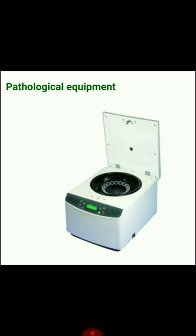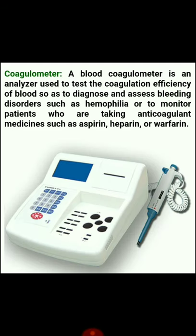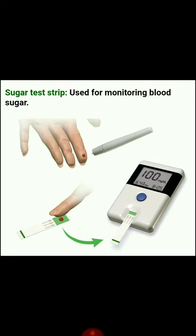Next is pathological equipment. The coagulometer is an analyzer used to test the coagulation efficiency of the blood, to diagnose and assess bleeding disorders like hemophilia, or to monitor patients taking anticoagulant medicines such as aspirin, heparin, or warfarin. Next is the sugar test strip, used for monitoring blood sugar levels.